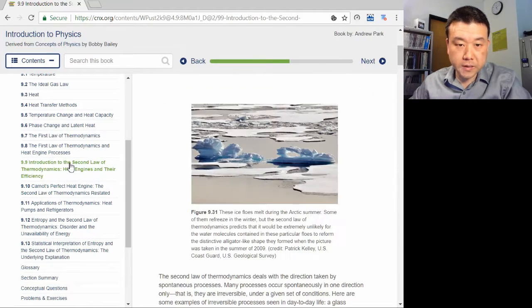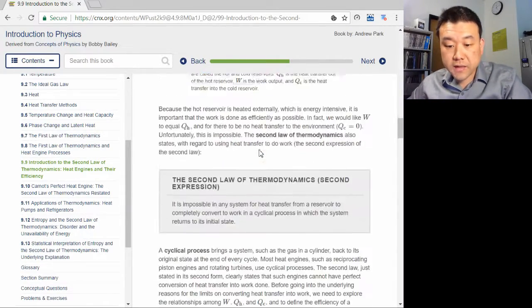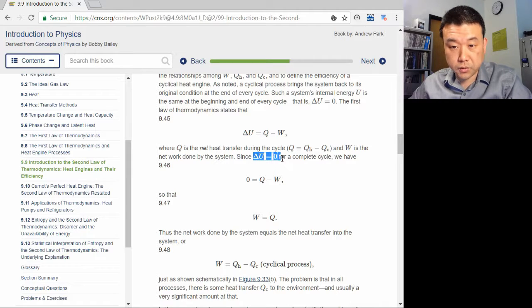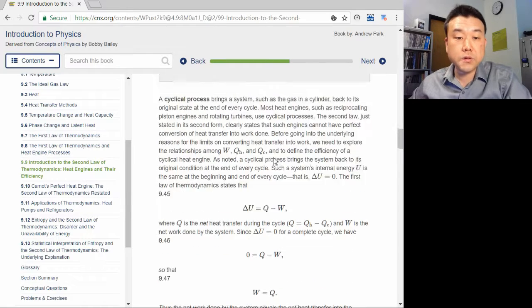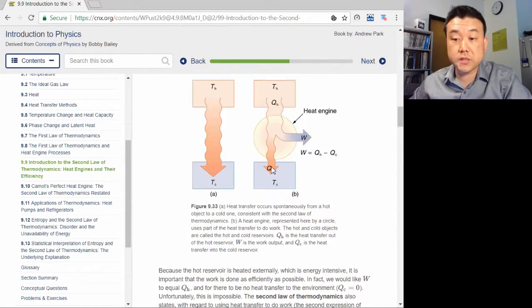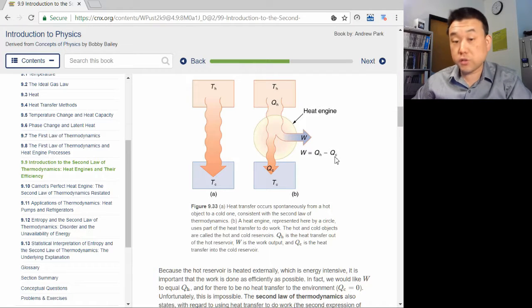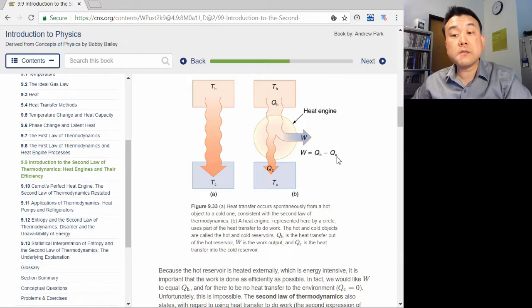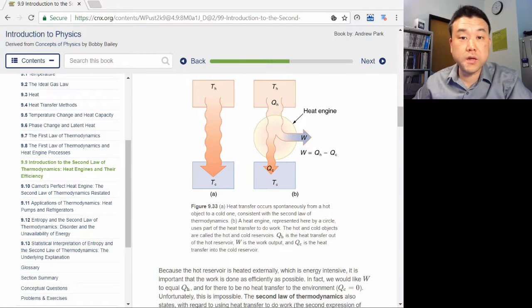One important feature of heat engine cycles, as pointed out in section 9.9, is that the net change of internal energy is zero over a cycle, because the engine returns to its original state after one cycle. This important fact gives you key thermodynamic relationships you will see in this chapter. For example, the work done by a heat engine in one cycle is equal to the net heat flow, QH minus QC. Since over one cycle, the change in the internal energy is zero. And the first law of thermodynamics says that net Q minus W is equal to the internal energy change.